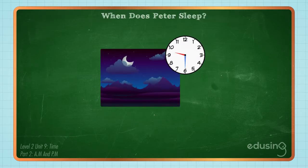Peter sleeps at 30 minutes after 9 o'clock in the evening. We say that Peter sleeps at 9.30pm.